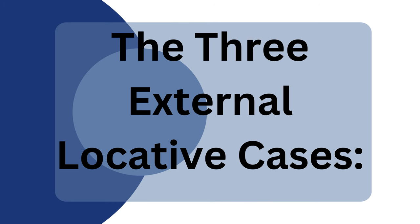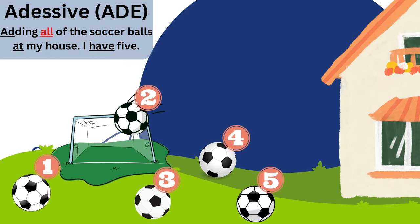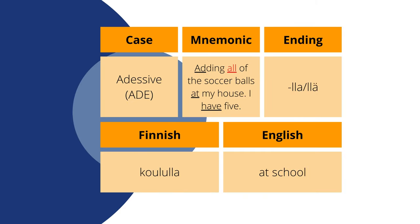Let's look at the three external locative cases. The next case in our mnemonic is the adessive case. It means on top of, around, or at something — for example, at my house. It also takes the function of 'to have' because Finnish doesn't have a verb for 'to have'; it uses the adessive case. It may also indicate time, the means or way of doing something, and it can be a general instrumental case. In colloquial Finnish it can be used as the word 'with.' The mnemonic for the adessive case is 'adding all of the soccer balls at my house — I have five': 'add' is for adessive, 'all' is the case ending spelled backwards (-lla or -llä), 'at my house' relates to the meaning, and 'I have five' because adessive can also be used as 'to have.' The example for the adessive case is koululla, meaning 'at school.'